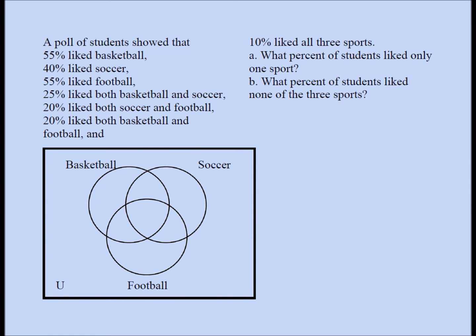Generally, it's a good idea to label the center first, if that fact is available. Everything is given in percent, so we can assume we're talking about 100% of the students — meaning the entire universe should be 100. If you add all eight regions, you should get 100. So we're going to put 10 in the center, because 10% liked all three sports.